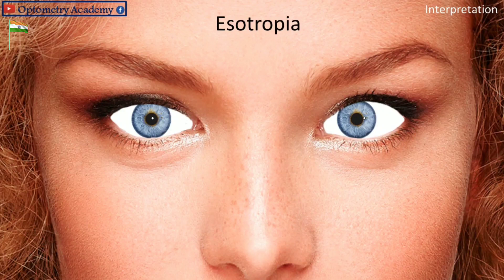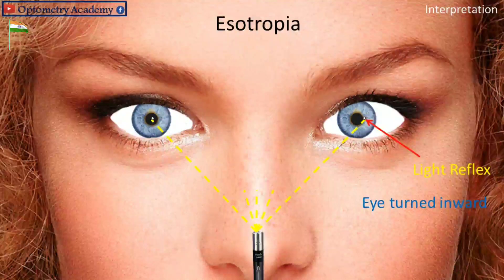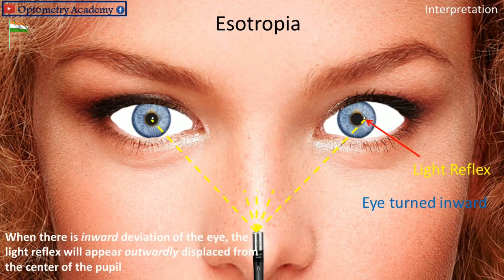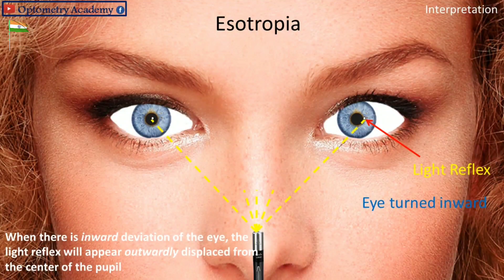Esotropia — eye turned inward: When there is inward deviation of the eye, the light reflex will appear outwardly displaced from the center of the pupil.